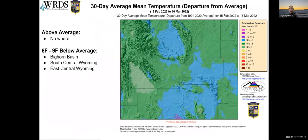This map shows the 30-day average mean temperature departure from average — essentially what temperatures have been doing since our last webinar. Sublette County was again the quote-unquote warmest at zero to three degrees below average. The same culprit areas — the Bighorn, south-central and east-central parts of the state — were six to nine degrees below average, with the rest of the state three to six degrees below average.